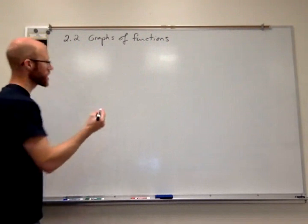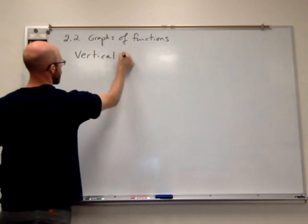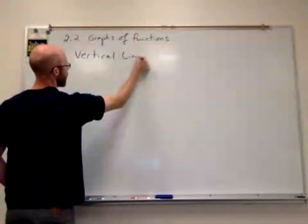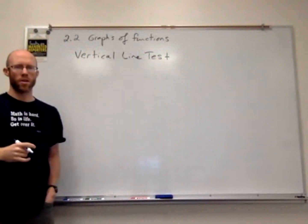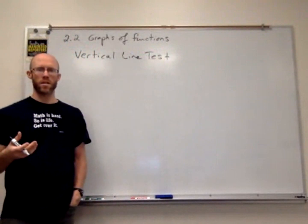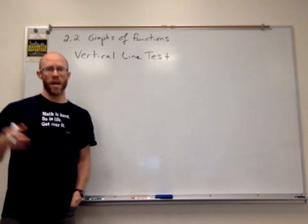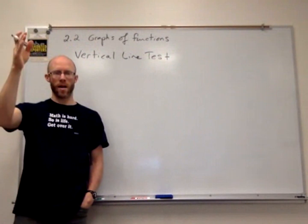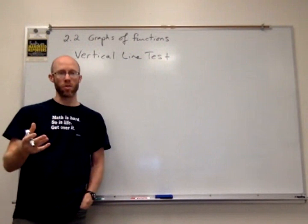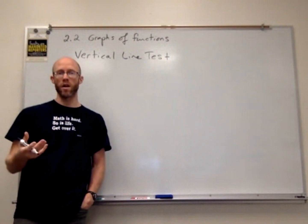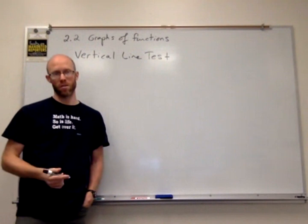Just remember with the vertical line test — you're essentially testing to see if a graph represents a function. You look to see how many times vertical lines cross the graph. If any vertical line were to cross the graph more than once, the graph does not represent a function.